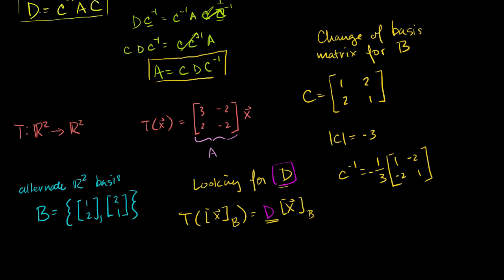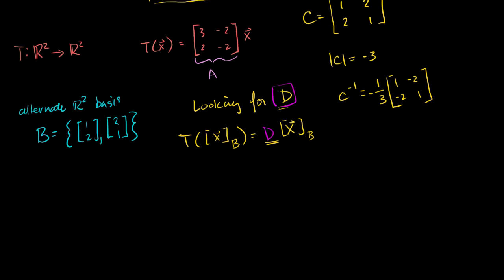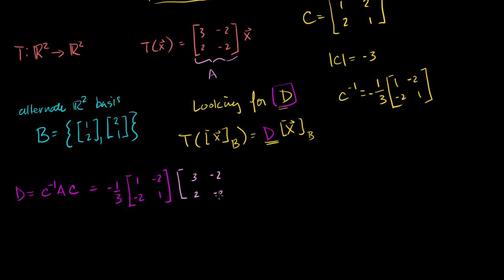So D equals C inverse times A times C. That's minus one-third times [[1, -2], [-2, 1]], times [[3, -2], [2, -2]], times [[1, 2], [2, 1]]. Let's compute A times C first: the first entry is 3 times 1 plus minus 2 times 2 equals minus 1; then 3 times 2 minus 2 times 1 equals 4; then 2 times 1 minus 2 times 2 equals minus 2; and 2 times 2 minus 2 times 1 equals 2. So A times C equals [[-1, 4], [-2, 2]].